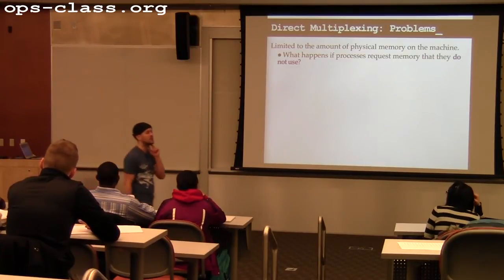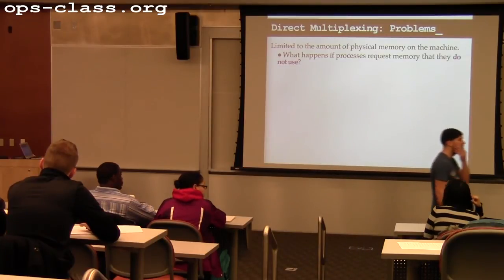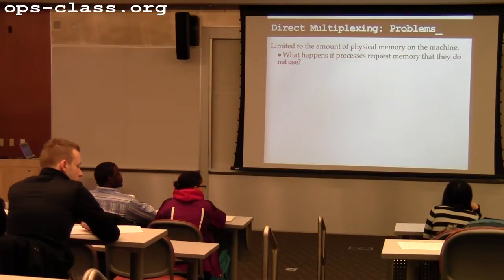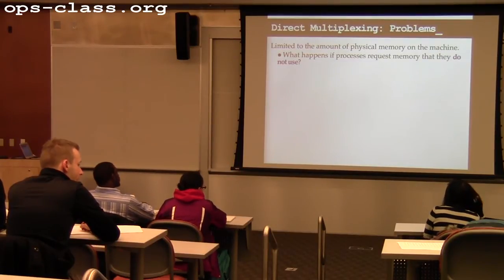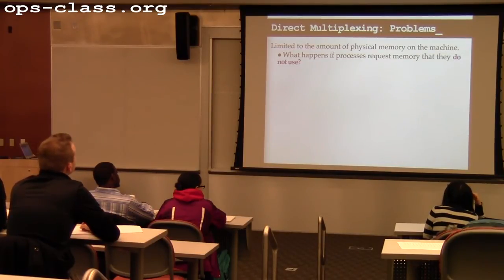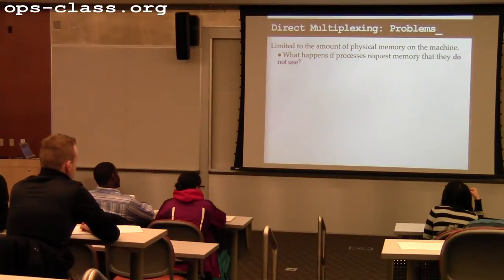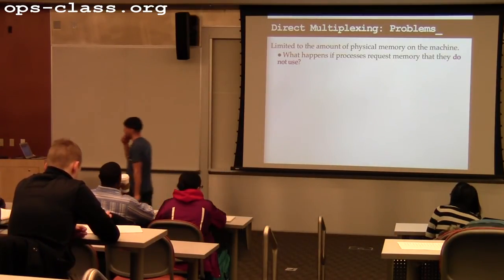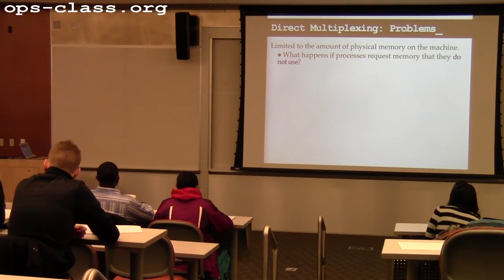Give me an example of parts of memory that a process might not be using. Large portions of its code base may not be used. If you're using Microsoft Word, it has 68 different ways to do anything. You chose one of them, and as soon as you click on a window, it executes some code path. If you don't click on that window for five minutes, that code is cold and that memory is not being used. There are features you don't use, parts of the code that might never be executed.